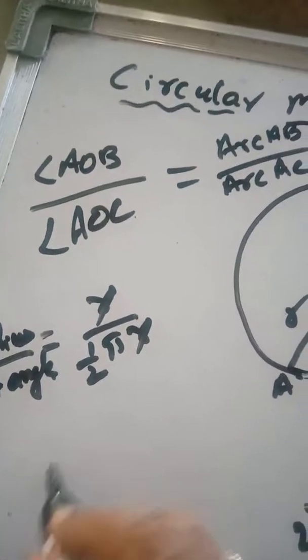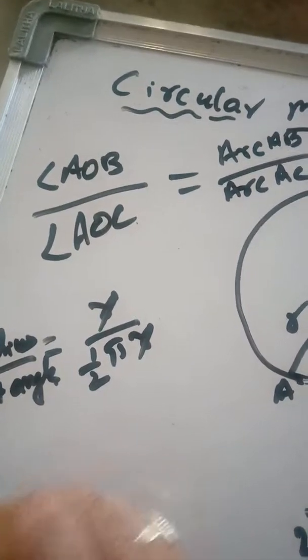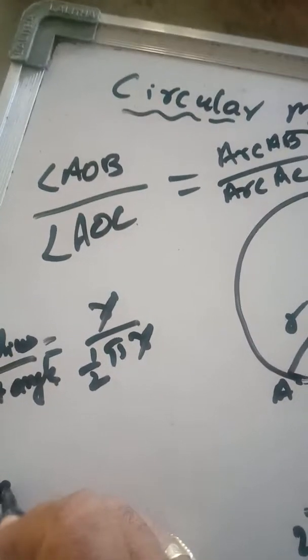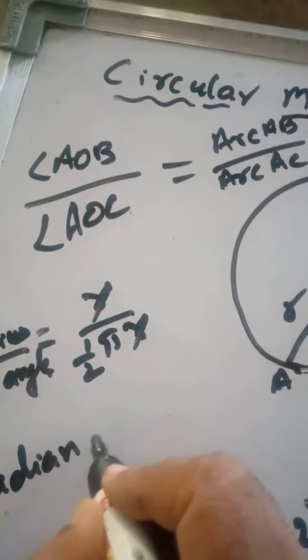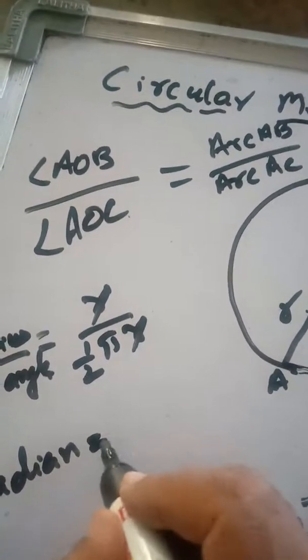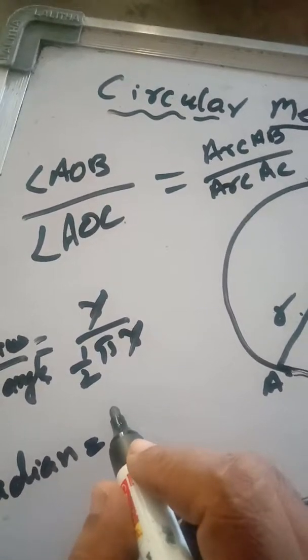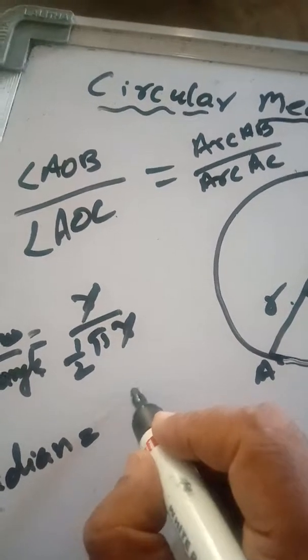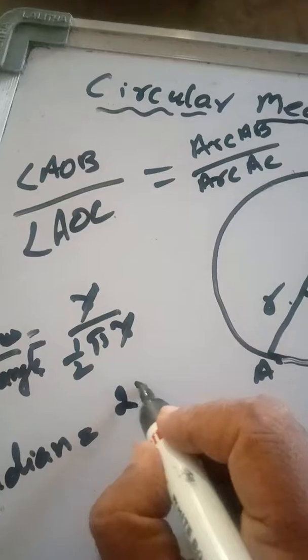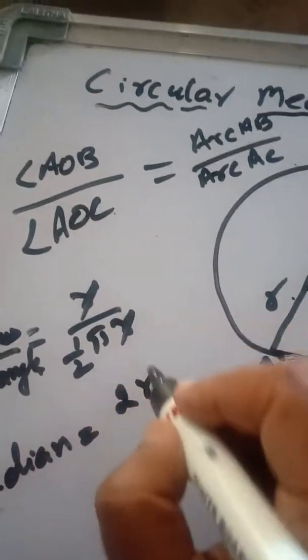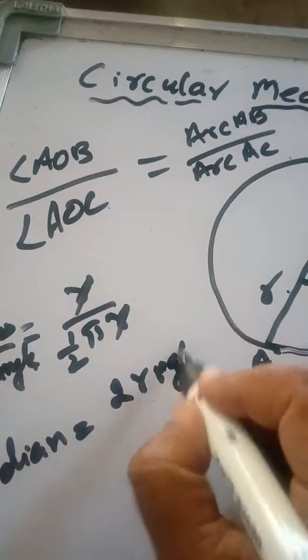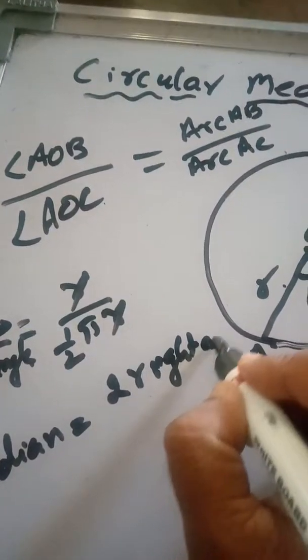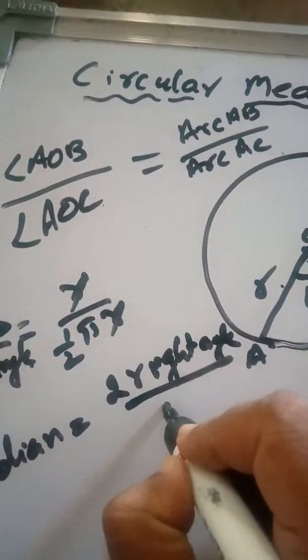So 1 radian equals 2 right angles divided by π.